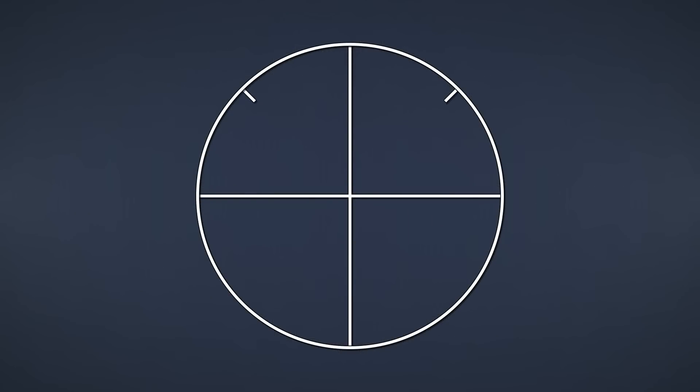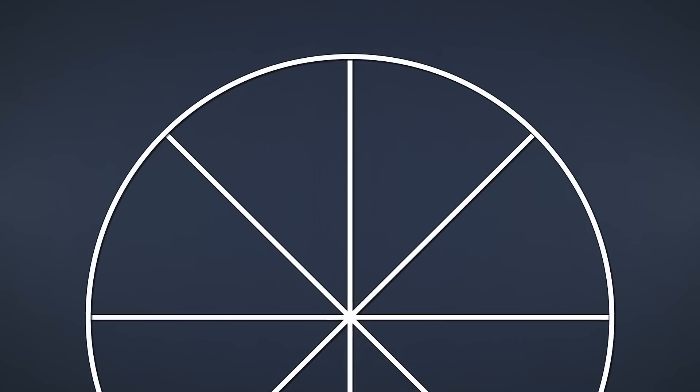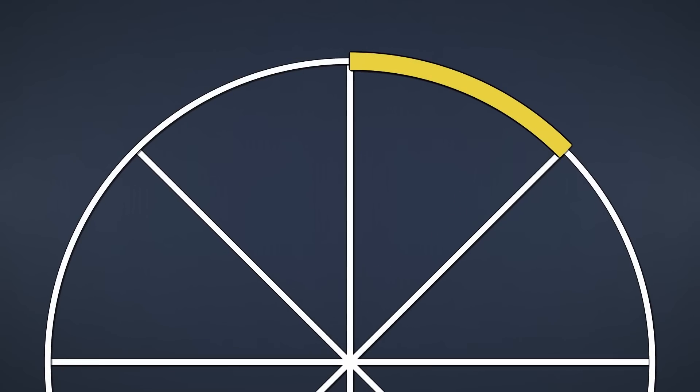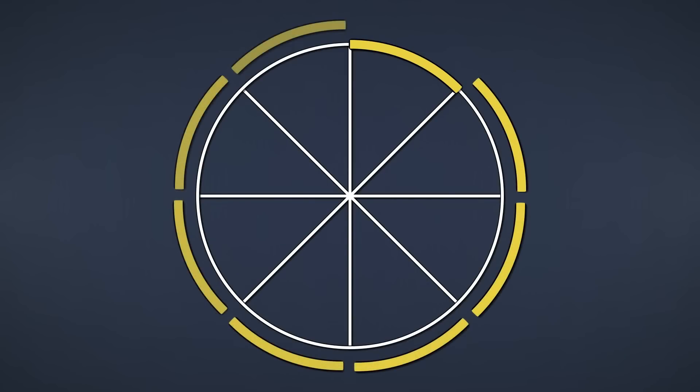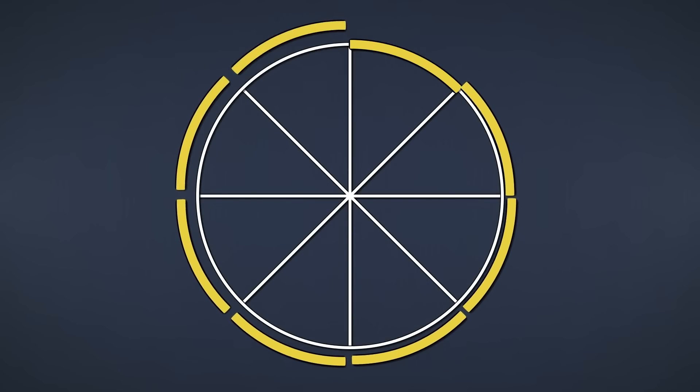First, circles are symmetrical. This means we only need to solve the problem for an eighth of the circle, called an octant. We can simply take the resulting pixel coordinates and mirror them for the remainder of the circle. That's going to be very convenient.